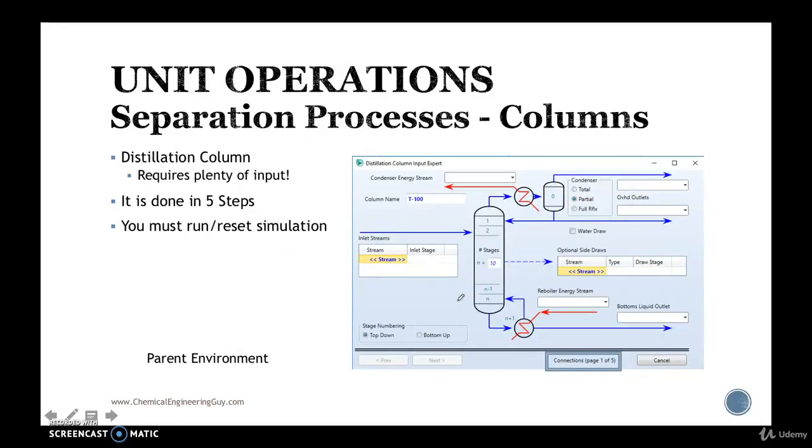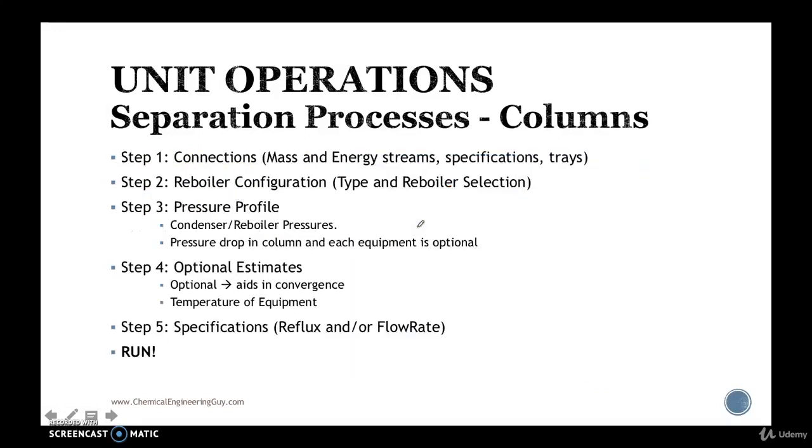Now I really like how ICIS uses five easy steps to set up a distillation column. For instance you need to state the distillation column first in this stage right here which is the input of data. Let me show you all these steps. The first step is to add connections. Second step is to configure or add details on the reboiler. Third step is pressure profile. Fourth step is optional estimates which will aid in convergence. And fifth step will be the specifications of the distillate.